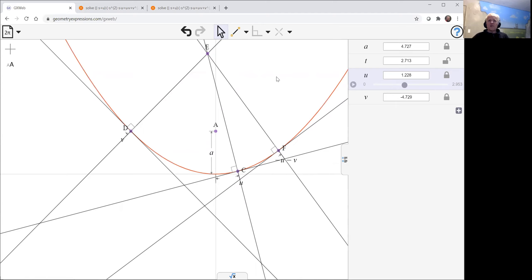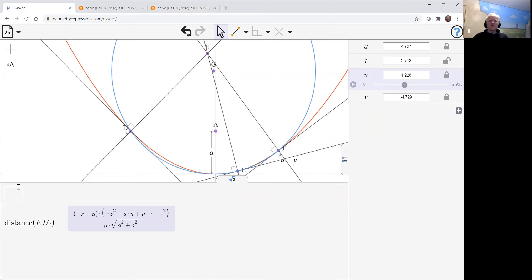So we select the points and the circle construction. And what we'd like to show is that that circle passes through the origin. One fast way of doing that is to just ask for the equation of the circle.